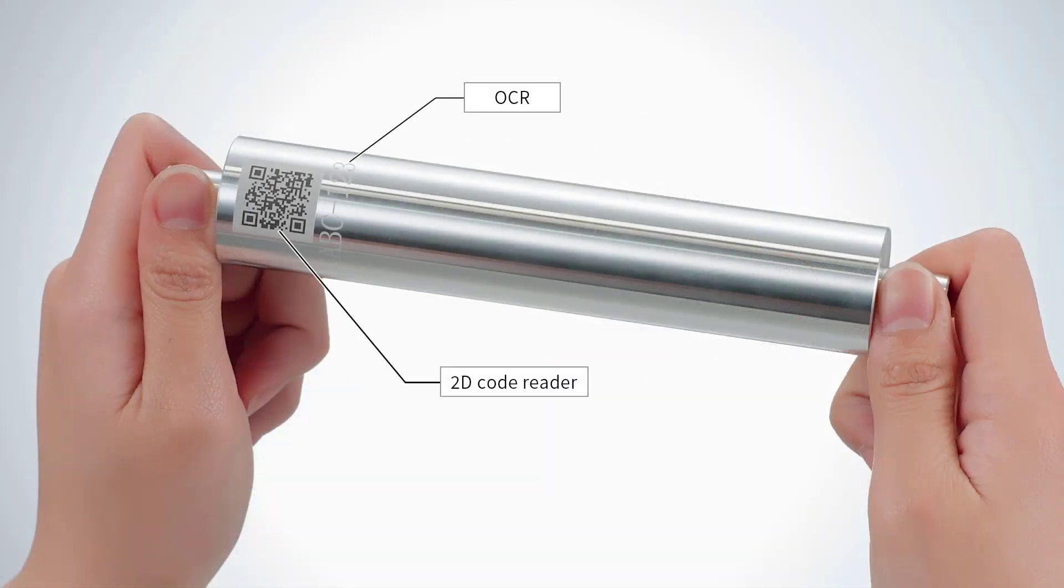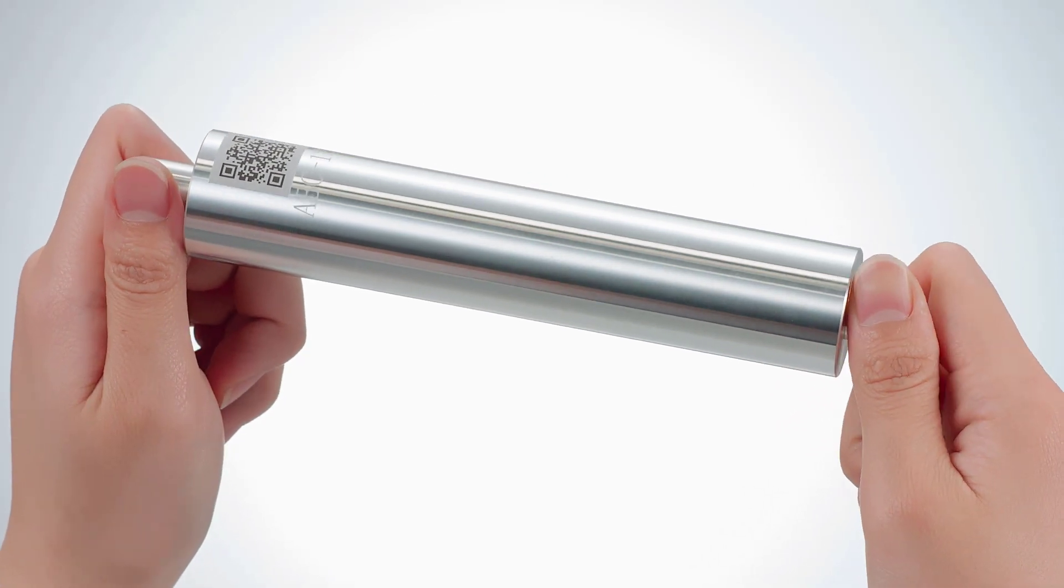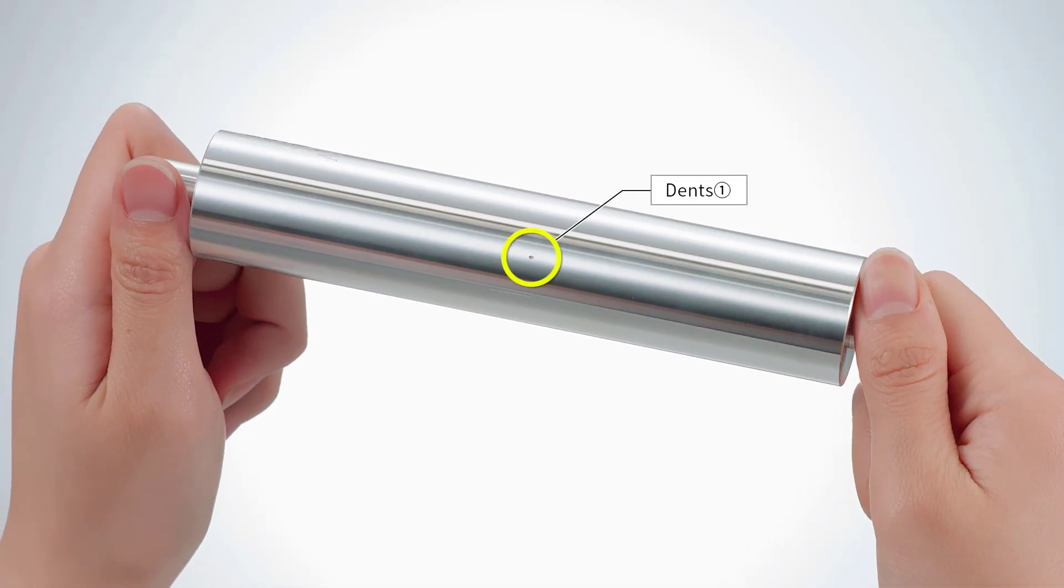Here, we have the metal cylinder with character inspection and 2D code reading. This part also has defects around its surface, such as dents and linear flaws.